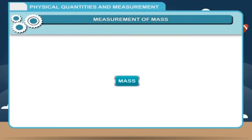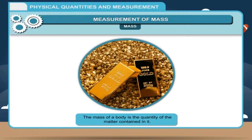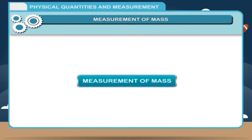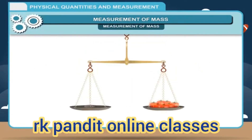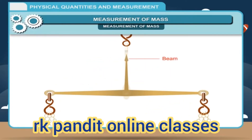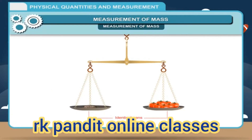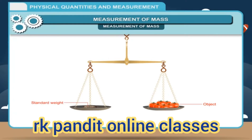The mass of a body is the quantity of matter contained in it. When we purchase tomatoes from the market, the vendor measures the mass of tomatoes using a balance. The beam balance has a long beam with a support at the center and two identical pans suspended at equal distances from the center. The object to be weighed is placed on one pan and standard weights are placed on the other until both pans are perfectly balanced. The total of the standard weights gives the mass of the object.